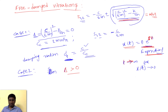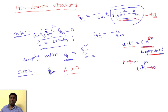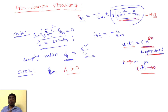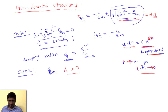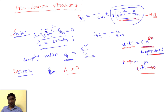As t approaches infinity, x(t) approaches zero because in most cases the amplitude never increases — it always decreases. There are no repeating sinusoidal terms in the solution, so the motion is not harmonic. In both Case 1 (critical damping) and Case 2 (overdamping), the nature of motion is exponential and decreasing as time increases.